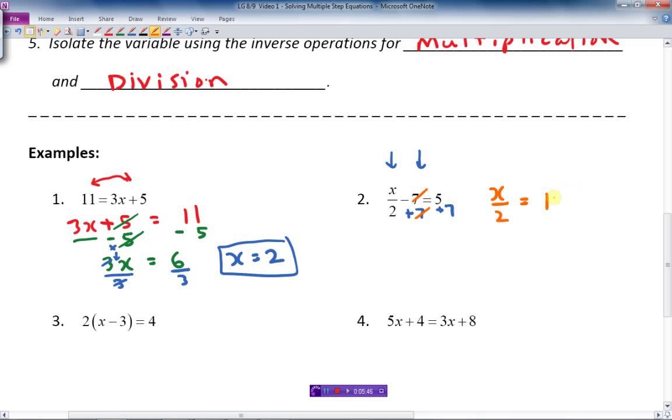And I got x over 2 equals 5 plus 7 is 12. And now I've got to get rid of that 2. I've almost got x by itself. What's the 2 doing to the x? It's dividing. It's a fraction like that, it means it's dividing. How do you get rid of that? You do the opposite of dividing, you multiply. So when I have 2 over 1, in other words multiply by 2, the 2s will cancel out and I get x equals 24. There's my answer for the next question.